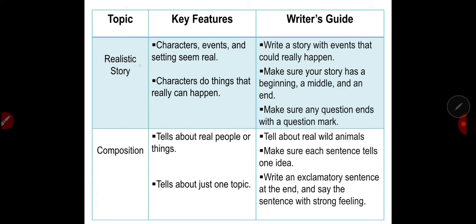Let's start with the realistic story. These are the key features of realistic story. Characters, events, and setting seem real. And characters do things that really can happen in real life. What about composition? These are the key features of composition. It tells about real people or things. And it tells about just one topic.